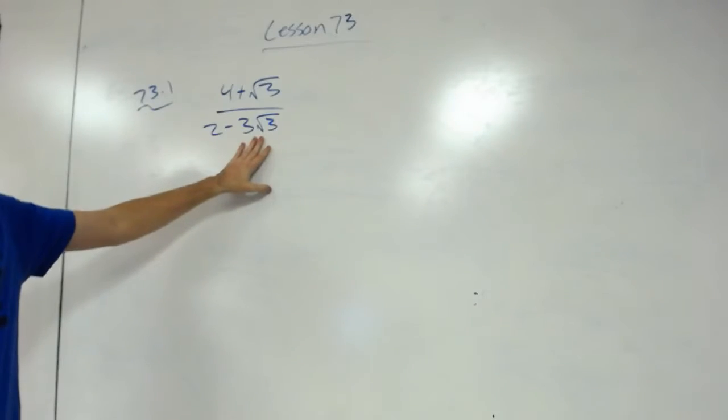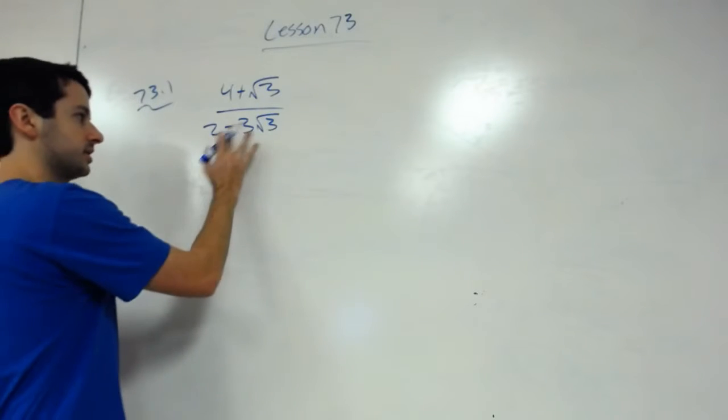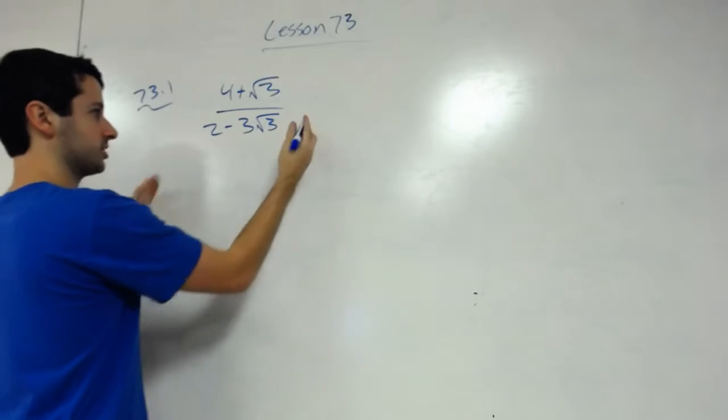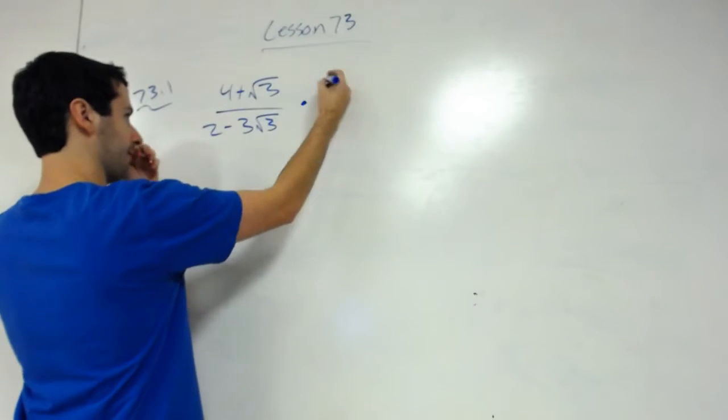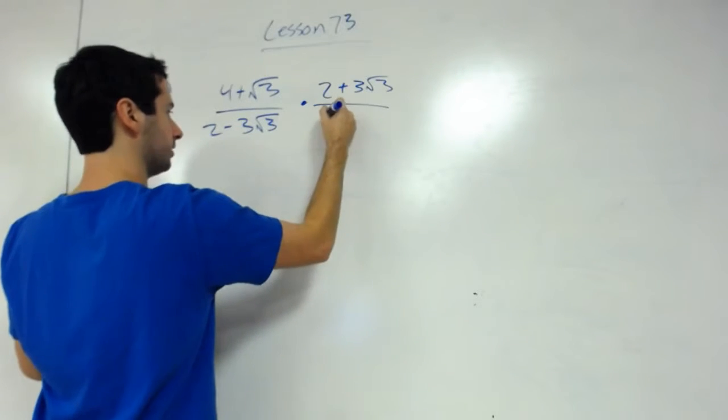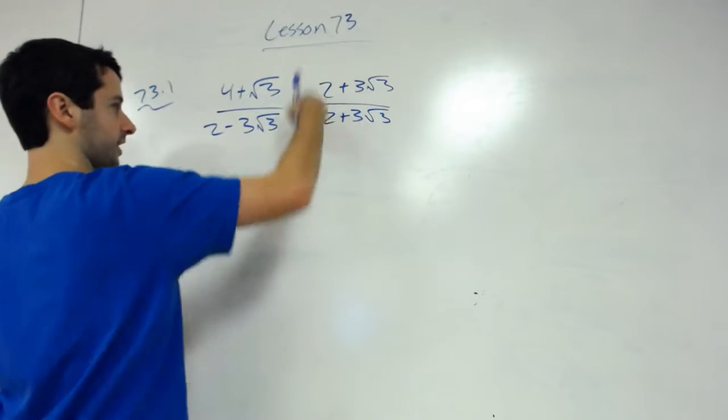So we've got to get rid of it by multiplying by the conjugate. If you remember what the conjugate is, the conjugate is just take this equation here and switch the sign. So we multiply by 2 plus 3√3 over 2 plus 3√3. Remember that's the same as multiplying times 1, but we are manipulating the equation.